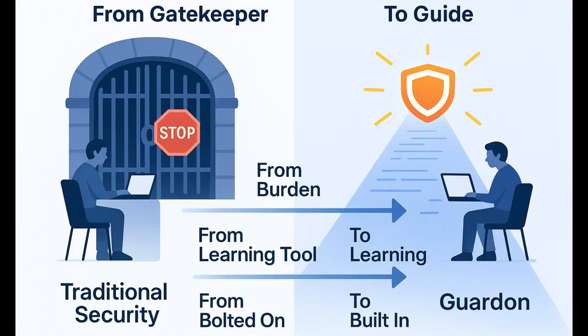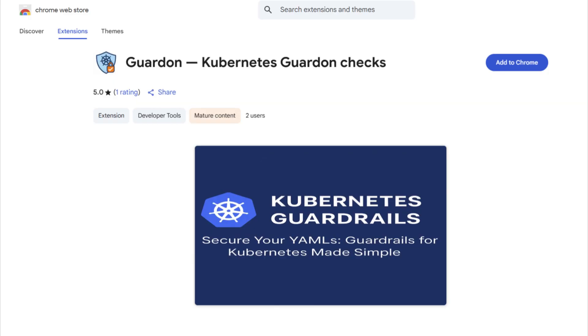Gardon isn't just another linter — it's a shift in mindset. It turns security from a gatekeeper into a guide. It transforms compliance from a burden into a learning tool, and it helps developers deliver with confidence, knowing that safety, performance, and compliance are built in, not bolted on. If you're a Kubernetes engineer, a DevOps specialist, or part of a platform engineering team, I invite you to try it out. Download the extension from the Chrome Web Store, load it in your browser, and see what it can do. Try your own YAMLs, customize a few rules, and experience how fast compliance can feel when it happens before the commit. If you have ideas or are interested in contributing, please visit my code repository by scanning the QR code on the screen or clicking the link below. Thanks — I'm Sajal Nigam, and this is Gardon, helping you and your team shift left, stay secure, and build confidently. Thank you for watching.